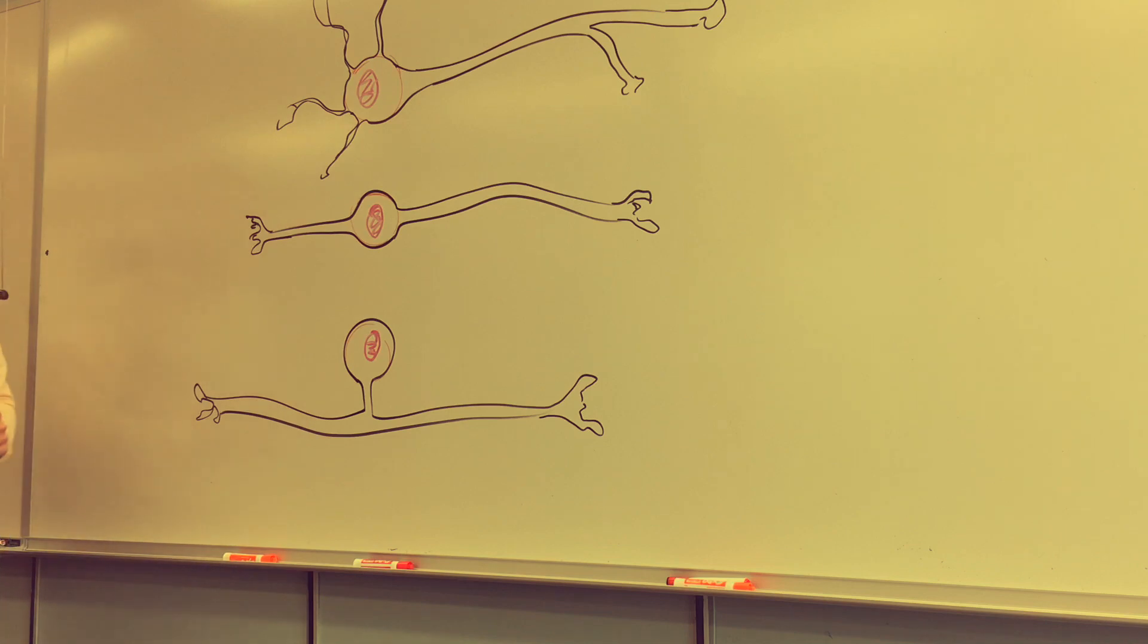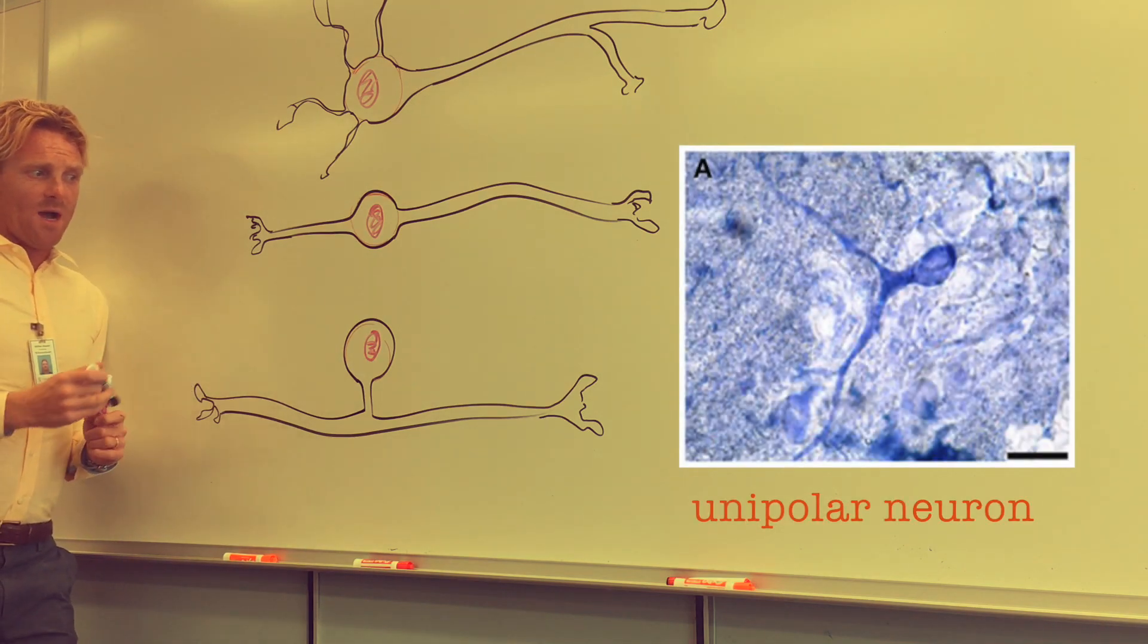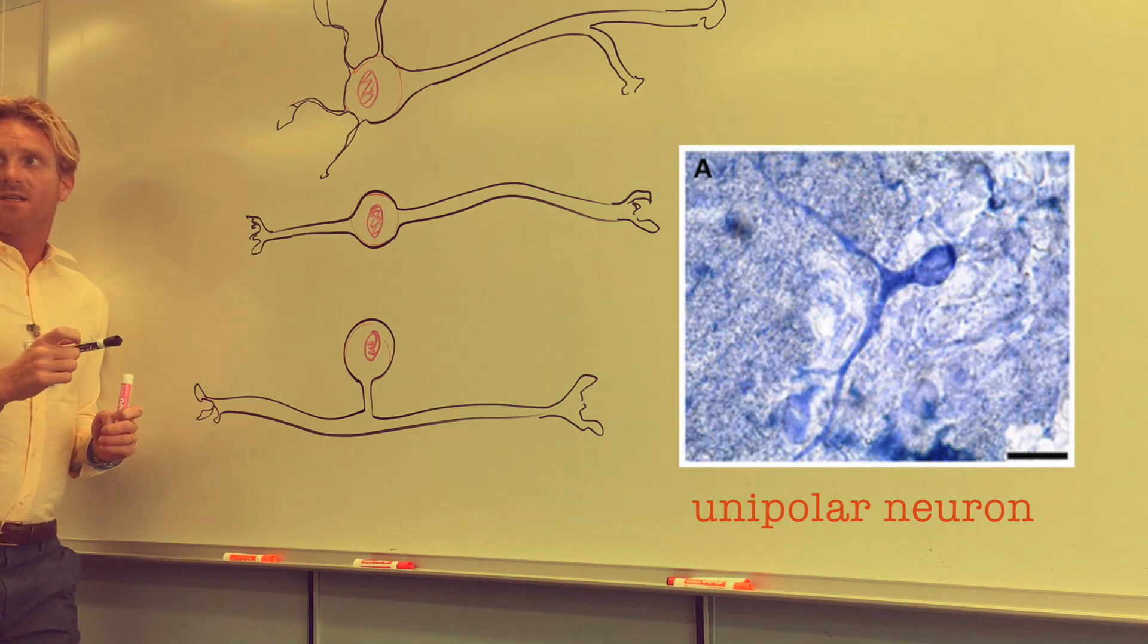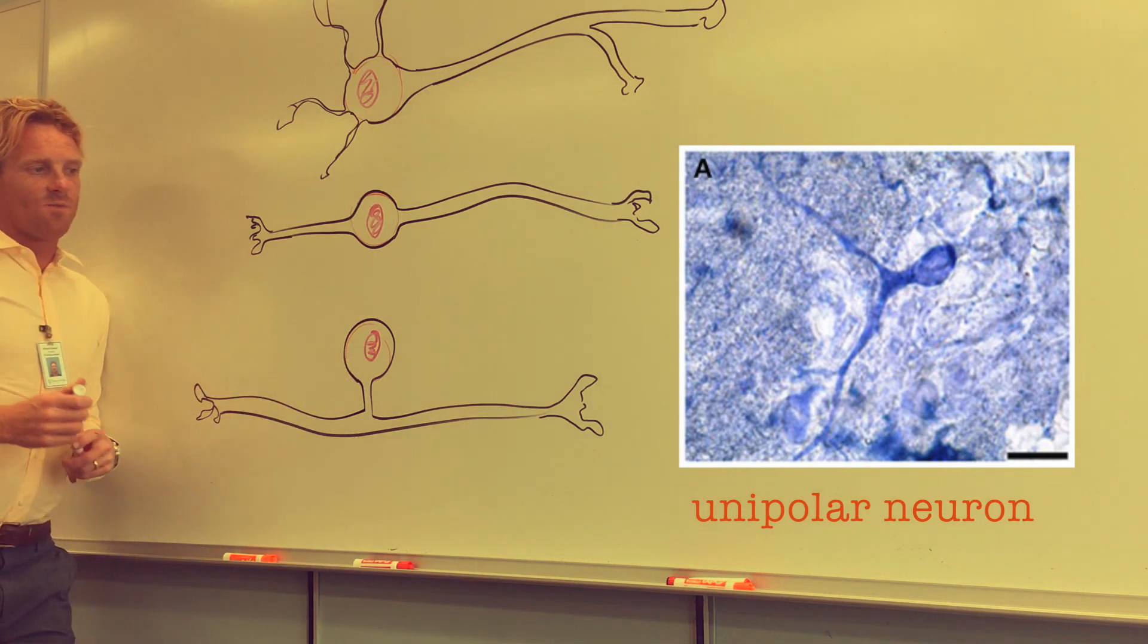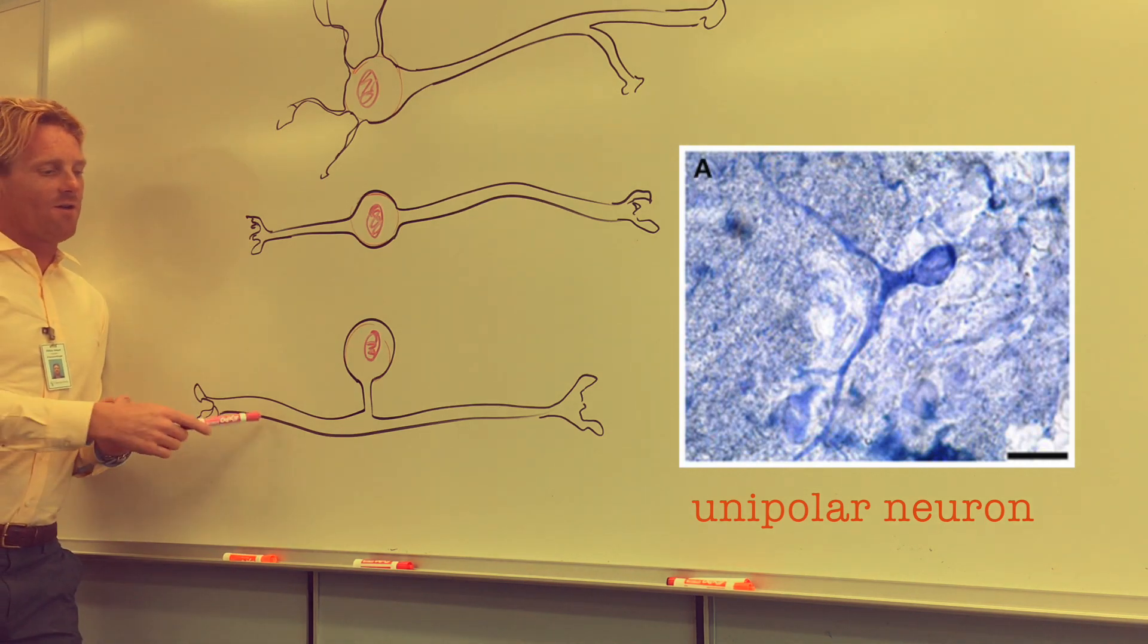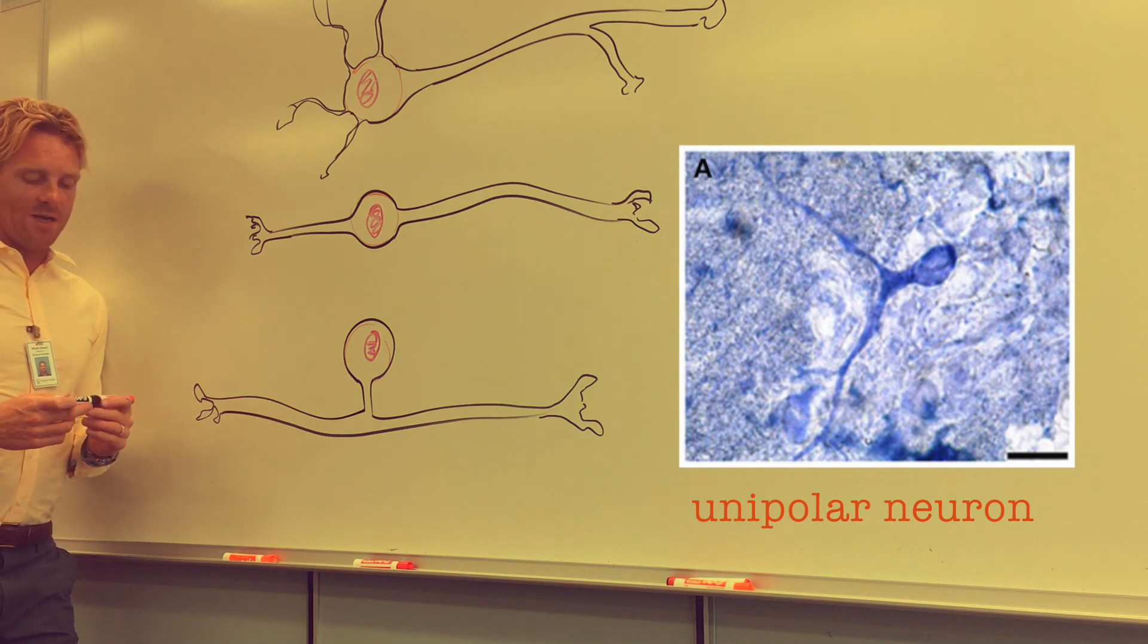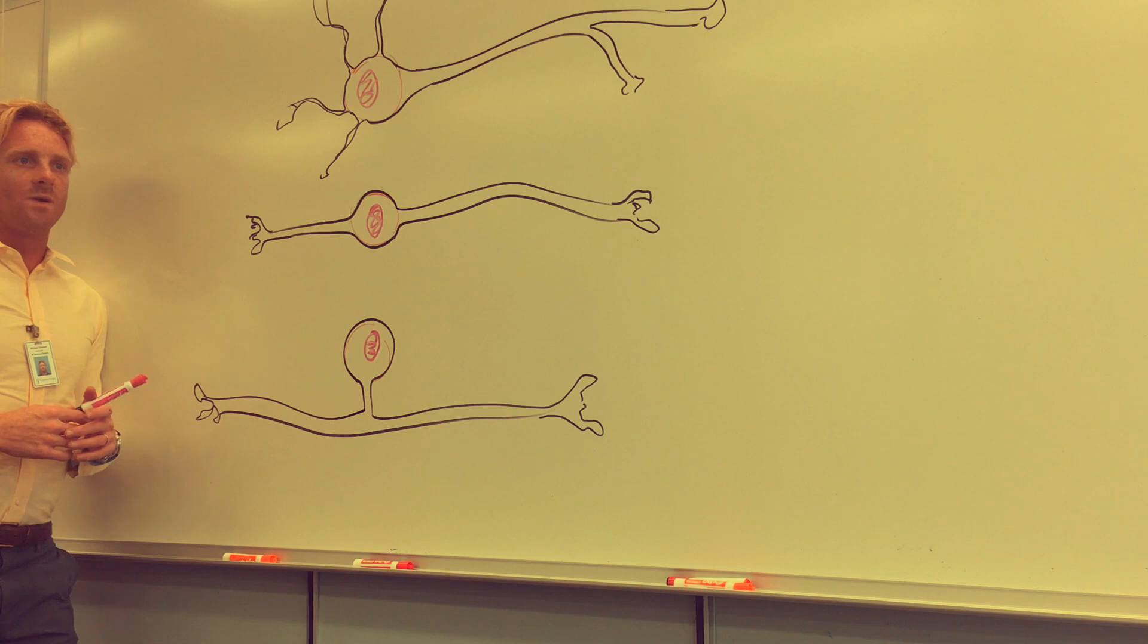This is called a unipolar neuron. And these are quite rare in the body. You will find these close to the spinal cord. Specifically, these cell bodies of these unipolar neurons are going to be located in the dorsal root ganglion, which are right beside the spinal cord. These are afferent nerves or afferent neurons that transmit sensory information to the spinal cord, which we'll talk about later when we get to the peripheral nervous system.